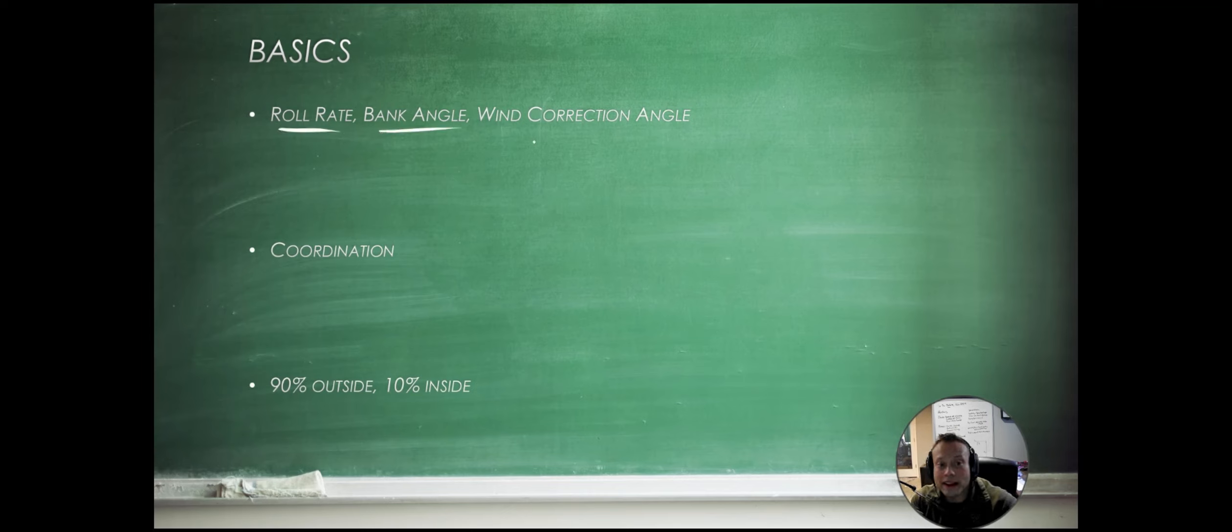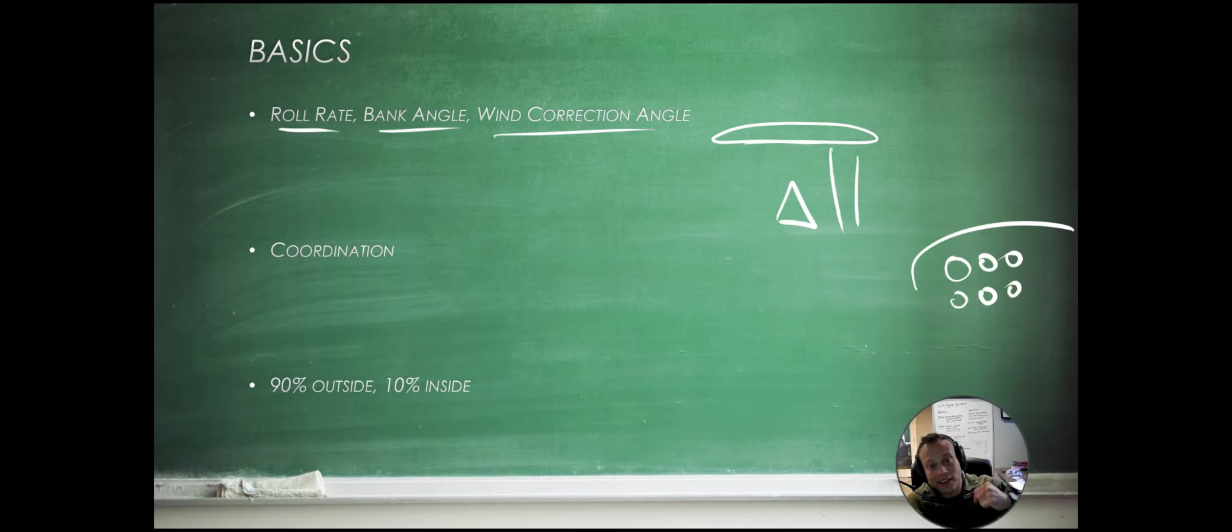Our roll rate, bank angle, and wind correction angle are constantly changing. So just keep in mind that you need to be looking out your window. Again, 90% of your time is outside the aircraft. If this is our reference point and this is your wing, we want to maintain where that object is outside of our aircraft. And we're going to look up and out, but then double check with our instruments that we are staying coordinated, that we are maintaining our altitude and correcting for our wind correctly.